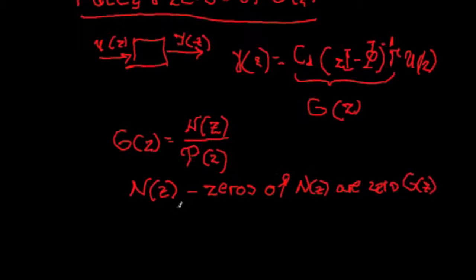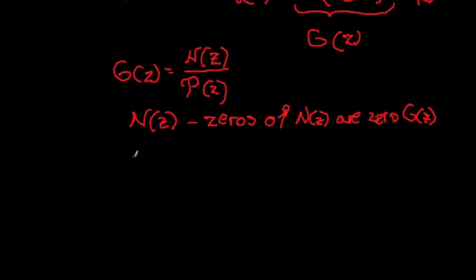In other words, if we evaluate this polynomial N(z) at a zero root of this polynomial, we also get that transfer function G(z) is equal to zero. And analogously, the roots of π(z) are poles of the transfer function.